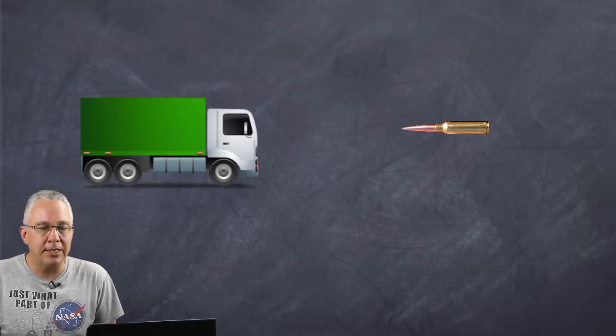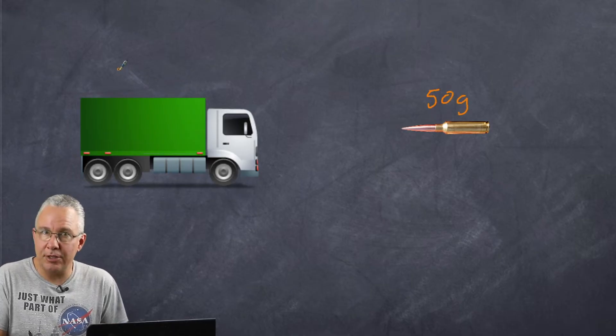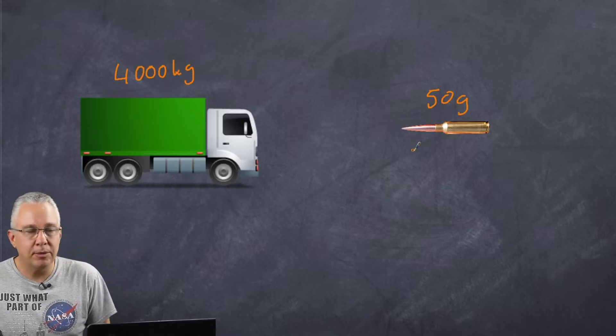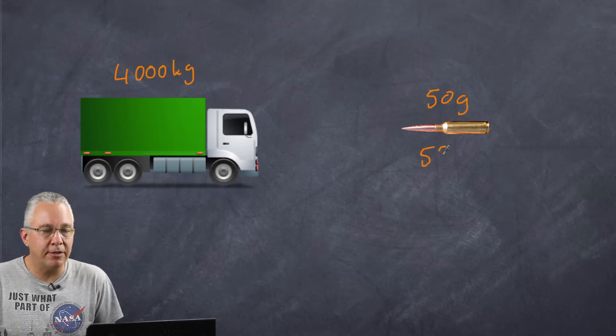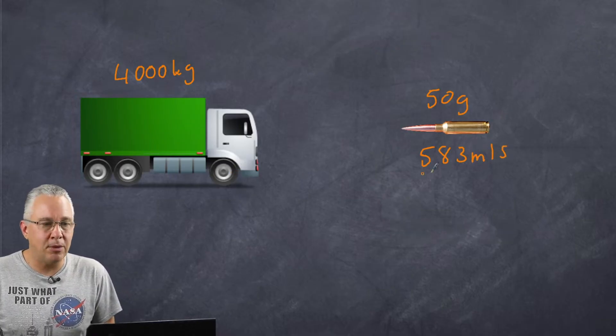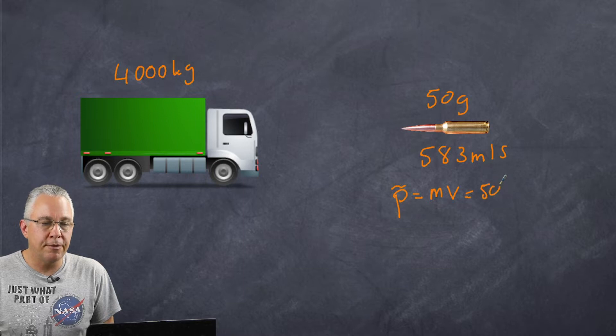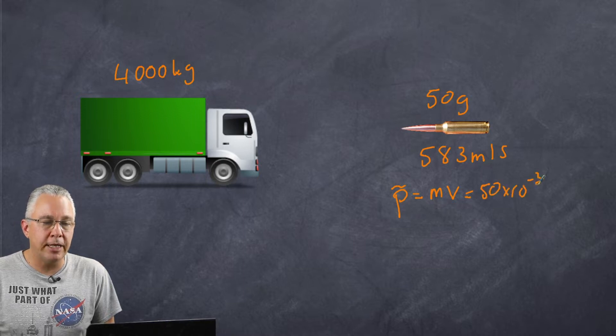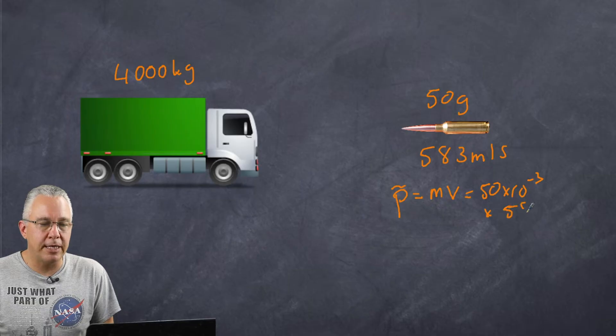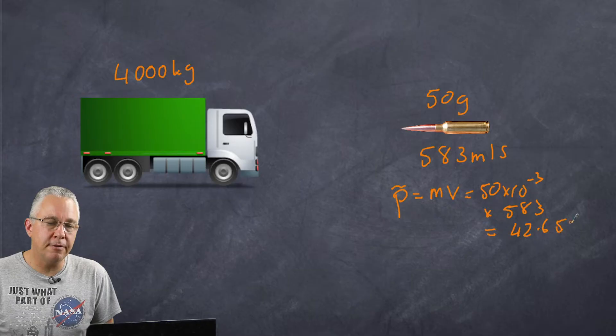Well, let's put some data here. We have a 50 caliber bullet and it's going to be 50 grams. Let's make our truck 4000 kilograms. Now our bullet is probably going to be flying around 583 meters per second. So what velocity does the truck have to go at? Now if I work out this in terms of the momentum, and the symbol we use for momentum is P, I'll have MV and that is equal to 50 times 10 to the power of negative 3, of course in SI units, multiplied by my 583 and I'm going to get a value of 42.65 kilogram meters per second.